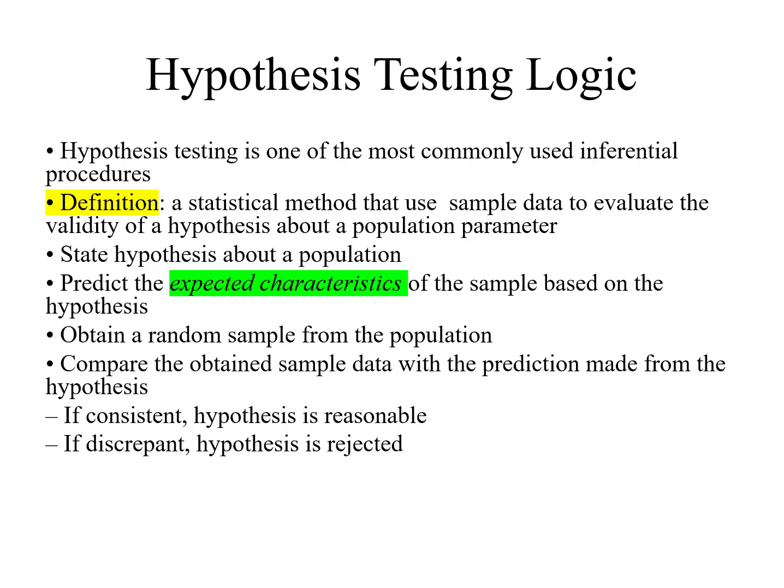A hypothesis is about a population and predicts the expected characteristics of the sample based on the hypothesis. We will take a random sample from a population, and on the basis of those expected characteristics, we will draw conclusions about the population. It compares the obtained sample data with the prediction made from the hypothesis. If it is consistent, then the hypothesis is reasonable; if it is not, the hypothesis will be rejected.